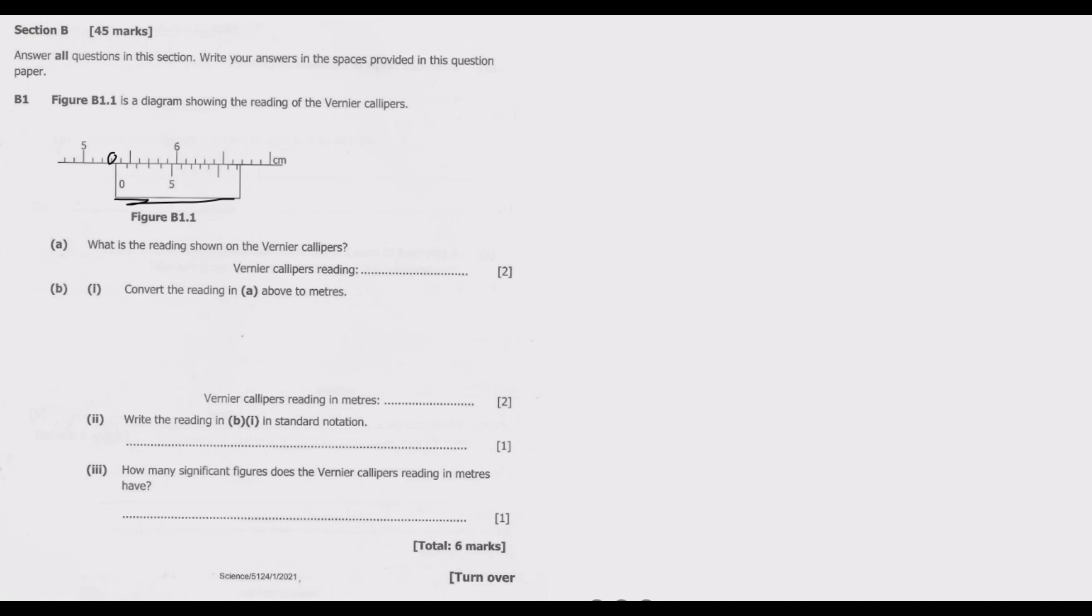Up to the point we're aware of, we have 1, 2, 3. So this gives us from the main reading 5.30 centimeters. Then we go to the caliper scale, which is the subunit.